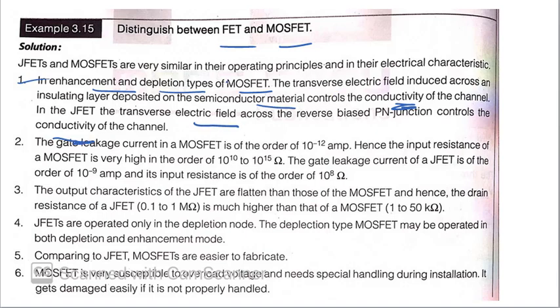The transverse electric field induces across an insulating layer deposited on the semiconductor controls the conductivity. It will control the conductivity of the channel. In JFET, the transverse electricity across the reverse bias junction controls the conductivity of the channel. In enhancement type, in MOSFET, the transverse electric field that is induced across the insulating layer deposited on the semiconductor material controls that. It will control the insulating layer will control the conductivity. And here, the electric field which is applied to the reverse bias junction will control the conductivity of the channel.